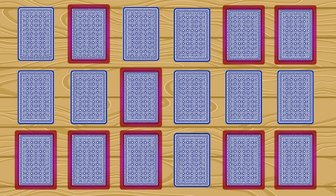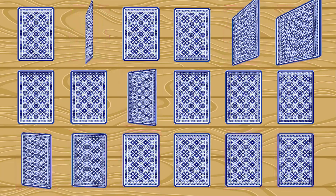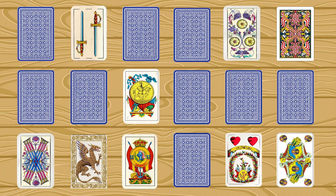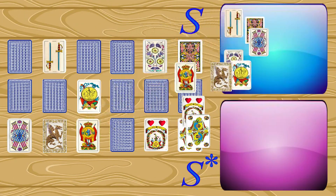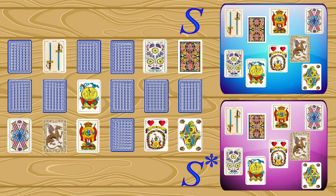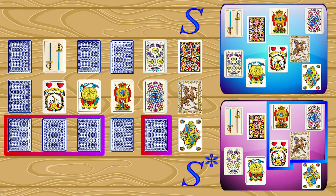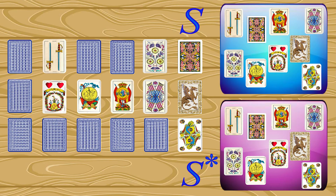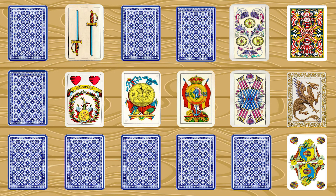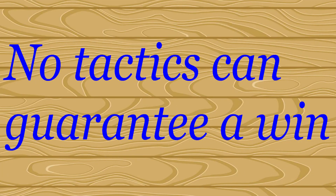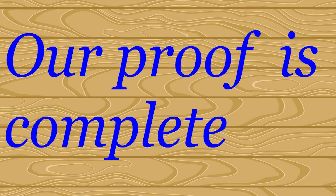Another tactic the player can use is: after choosing a set S of cards where, in the worst case, all symbols are different, the player can then choose some cards in the complement set S* of S. But in the worst case, the chosen cards in S* have symbols exactly matching those of the cards in set S, which are now faced down — so again the player chose N cards with N different symbols. It can be seen that all viable tactics are covered by this analysis. Hence, no tactic can ensure a win after a prescribed number M of turns. This proves the second part, and our proof is complete.